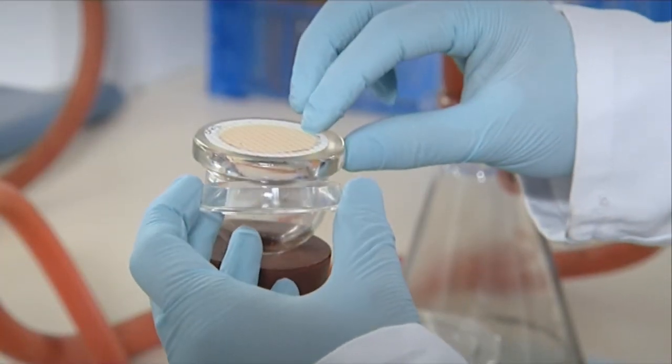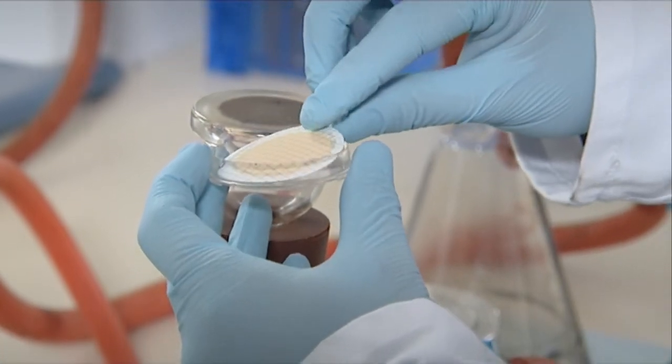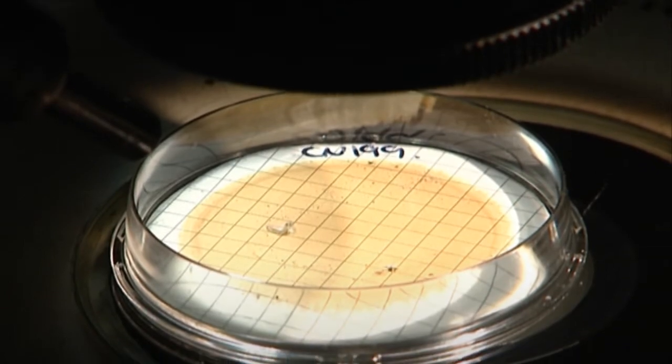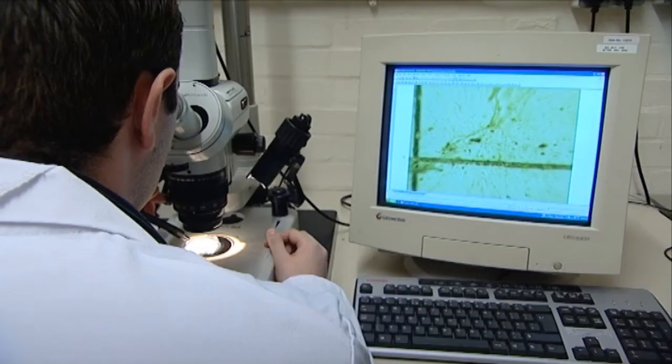We then look at the solid contamination in the oil. This is achieved by filtering the oil through a very fine filter paper and collecting that contamination. The solid contamination then is identified using an optical microscope, and here we're trying to understand the nature and also the quantity of particulate on that filter paper.